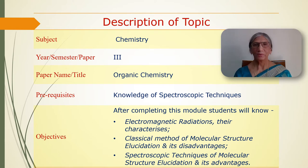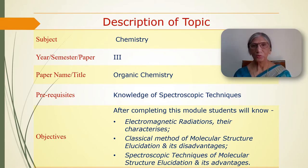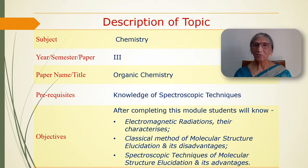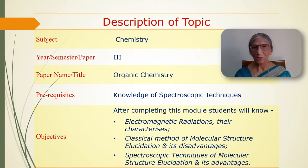The topic I am going to take up is Nuclear Magnetic Resonance Spectroscopy. The prerequisite for this topic is that the student should have a knowledge of spectroscopic techniques. After the completion of this module, students will know about electromagnetic radiation and their characteristics, classical methods of molecular structure elucidation and their disadvantages, and spectroscopic techniques of molecular structure elucidation and their advantages.